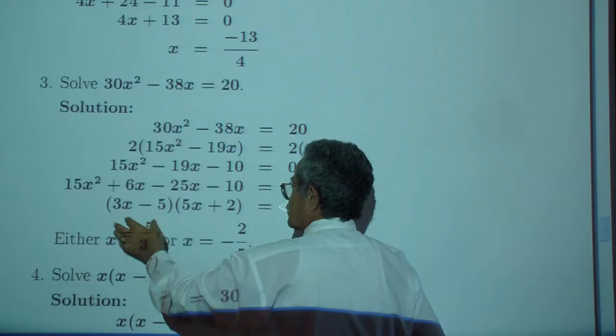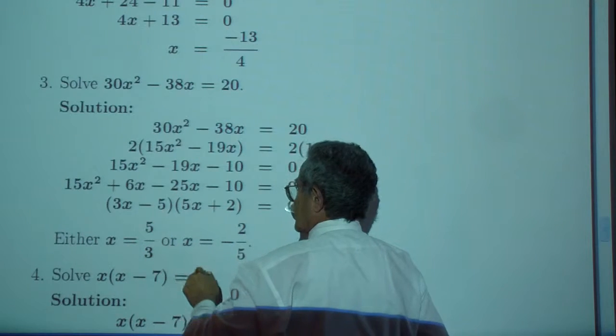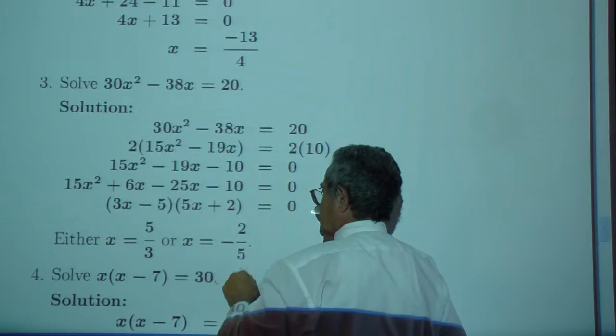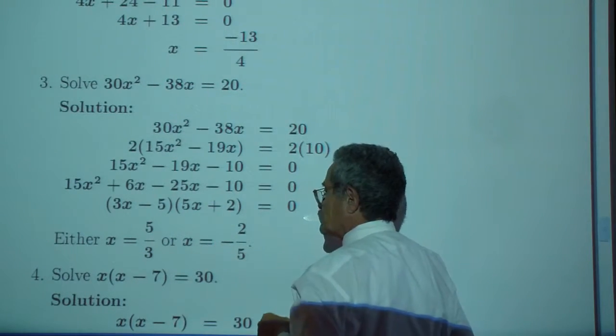So either 3X minus five is zero, which means X is five over three, or 5X plus two is zero, so X is negative two over five.